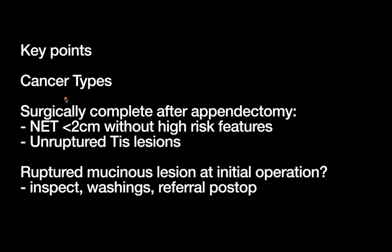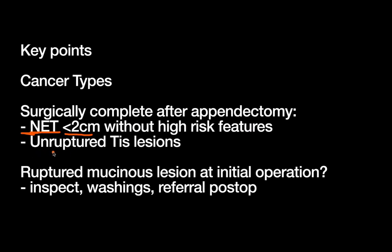To bring it back to some key points: number one, not all appendiceal tumors are alike. Be very aware of which cancer type you're dealing with — there's strange terminology, the variable of whether the lesion produces mucin or not, and the neuroendocrine subtype. Make sure you know: is this a neuroendocrine tumor, a goblet cell tumor, or an epithelial tumor? Only after you've determined that should you start thinking about management options. The key fact for a non-specialist is knowing which patients are surgically complete after their appendectomy — patients with a neuroendocrine tumor less than two centimeters without high-risk features, or patients with unruptured TIS lesions in the LAMN or HAMN category. Everyone else, you're generally referring to a more specialized center for consideration of a right hemicolectomy, plus or minus cytoreductive surgery and HIPEC.